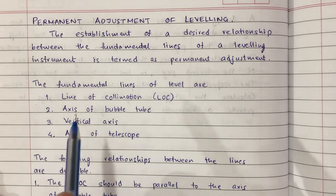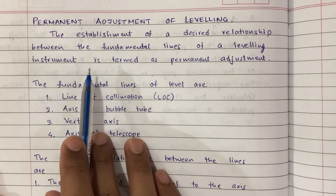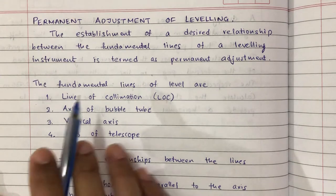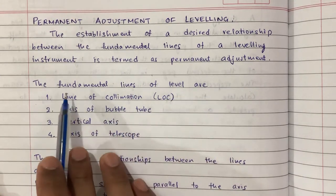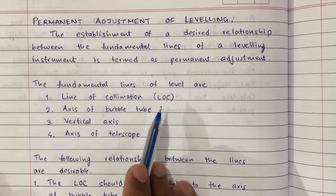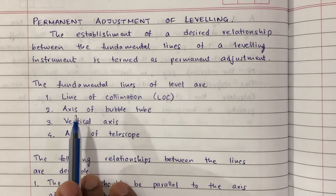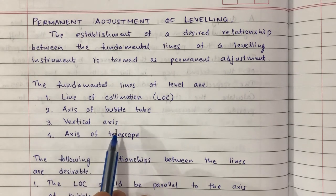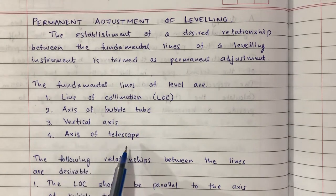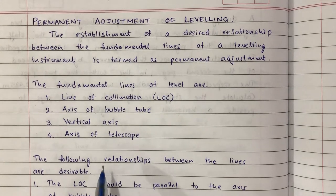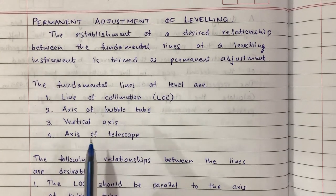You have to establish a desired relationship between the fundamental lines of a level. There are four fundamental lines: one is the line of collimation (LOC), second is the axis of bubble tube, third is the vertical axis, and fourth is the axis of a telescope. These are the four fundamental lines of a level.